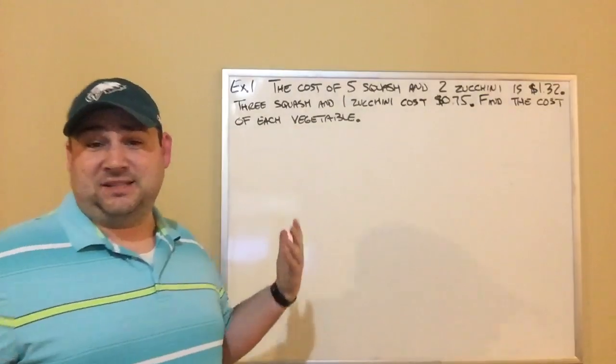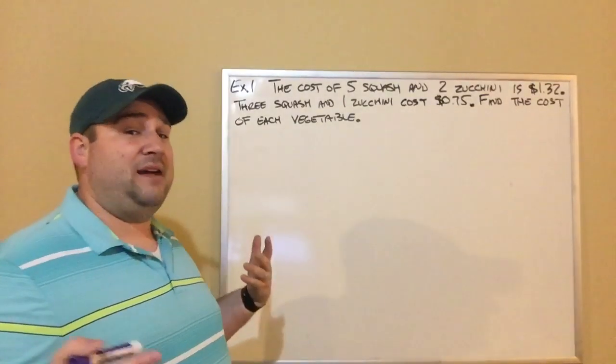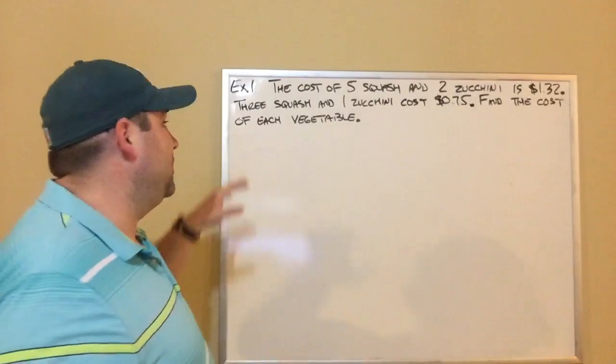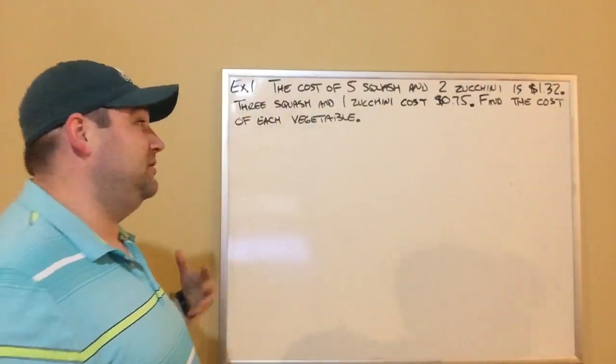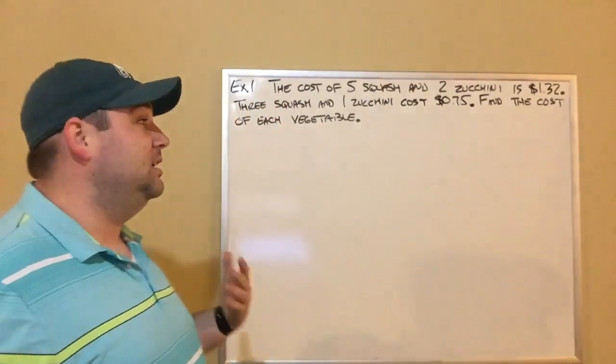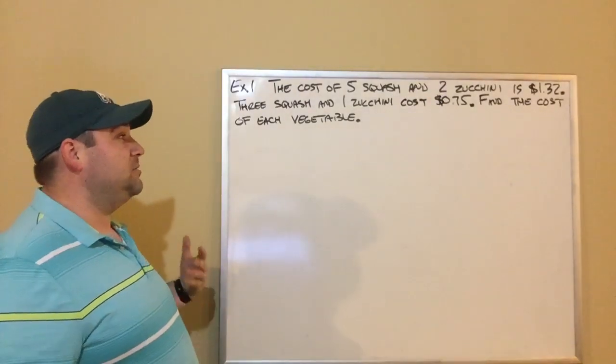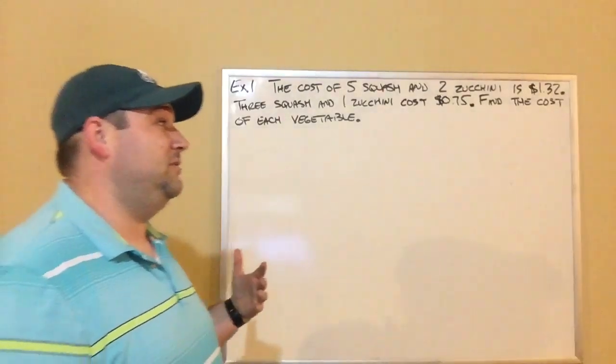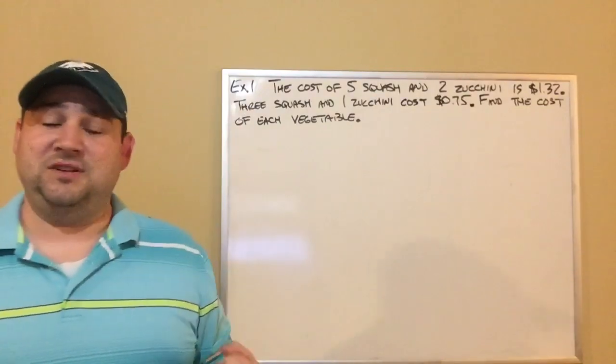So you should have the three examples. It was on Google Classroom. And you can see the first example is the cost of five squash and two zucchini is $1.32. Three squash and one zucchini cost $0.75. Find the cost of each vegetable.